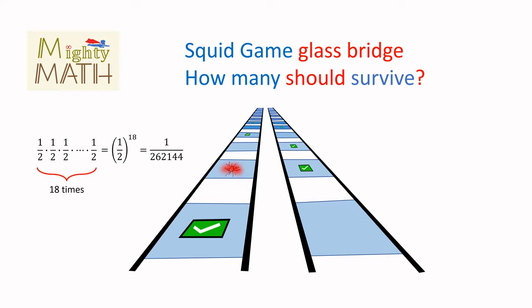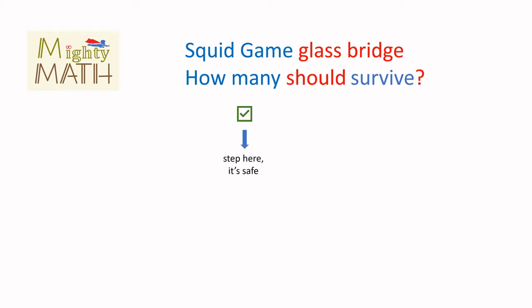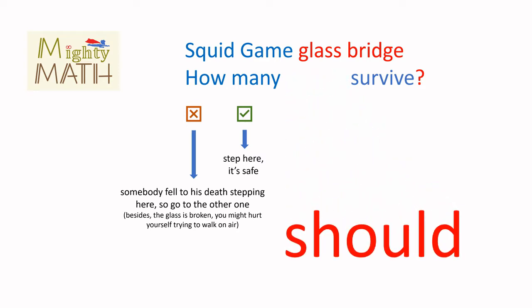But whatever choice a player makes, the rest of the players awaiting their turn get some information about the correct path. Because even if the very first step is wrong and the player is eliminated, the other players know where not to step. However, it is very unlikely that everybody would simply plunge to their death on the first step. So how many should survive?